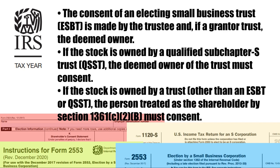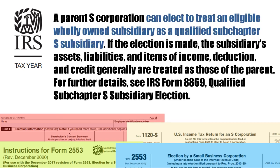If the stock is owned by a trust other than an ESBT or QSST, the person treated as a shareholder by Section 1361(c)(2)(B) must consent. A parent S-Corporation can elect to treat an eligible wholly owned subsidiary as a qualified Subchapter S subsidiary. If the election is made, the subsidiary's assets, liabilities, and items of income, deduction, and credit generally are treated as those of the parent. For further details, see IRS Form 8869, Qualified Subchapter S Subsidiary Election.